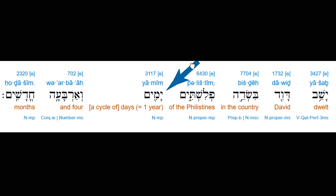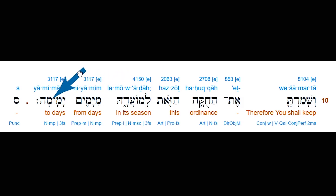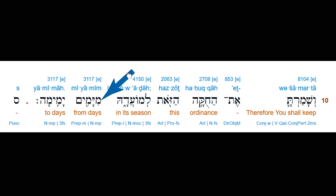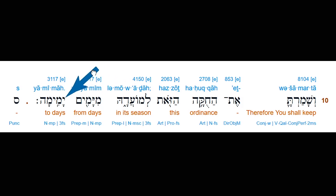Here again in Exodus 13:10 we see it. 'From year to year' — but that's not literally what it says. It says 'from days to days': miyamim yamimah. The directive he means 'to,' and the preposition min, shortened, means 'from.' From days to days — each set of days being considered a whole year. So 'from year to year' is the meaning of the idiom, but it's expressed in so many days, so that the phrase yamim, days, is equivalent to a year.